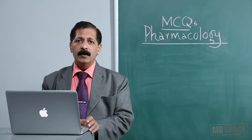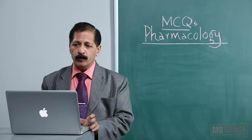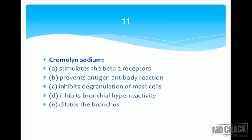Welcome, students. We are discussing multiple choice questions on pharmacology and will discuss 10 questions in this session. Let's start: Chromolin sodium — what does chromolin sodium do? The options are: A) stimulates beta-2 receptors, B) prevents antigen-antibody reaction, C) inhibits degranulation of mast cell,